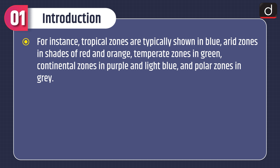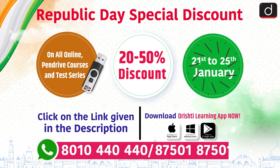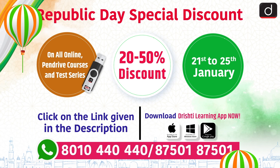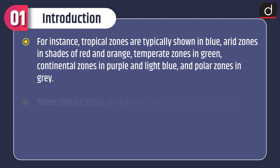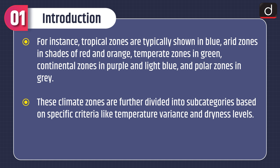For instance, tropical zones are typically shown in blue, arid zones in shades of red and orange, temperate zones in green, continental zones in purple and light blue, and polar zones in grey. These climate zones are further divided into subcategories based on specific criteria like temperature variance and dryness levels.